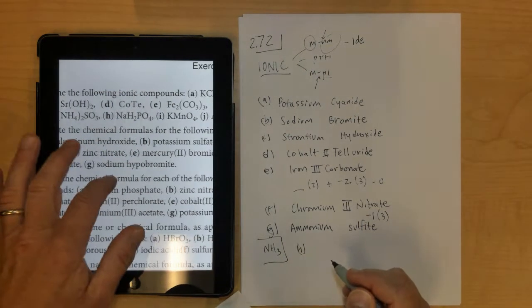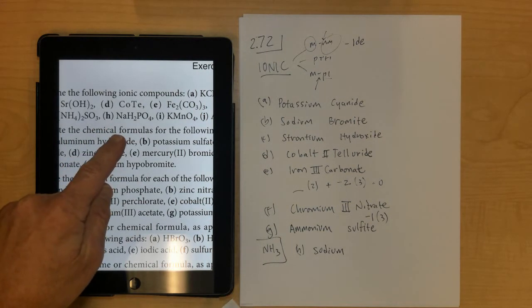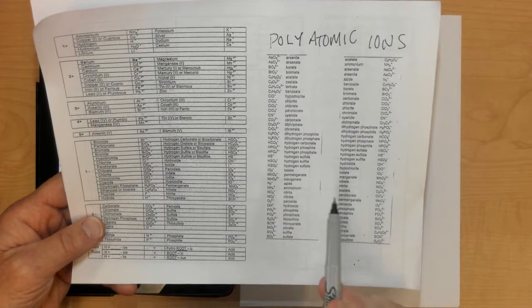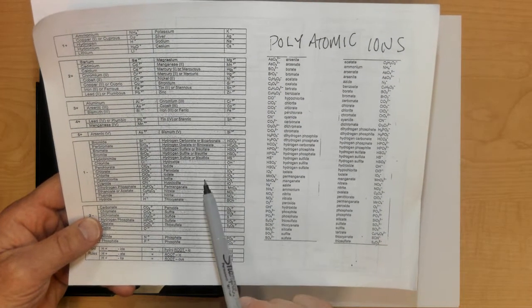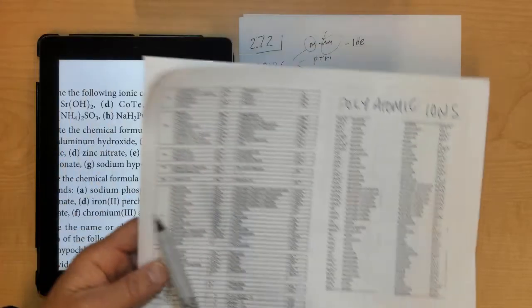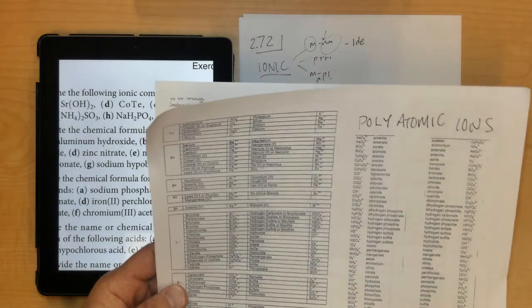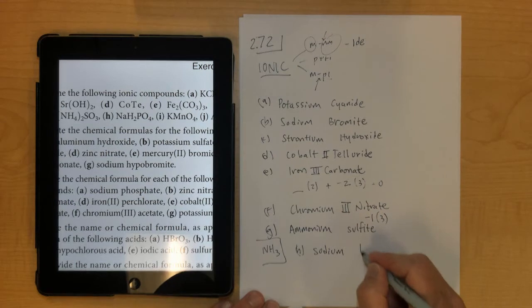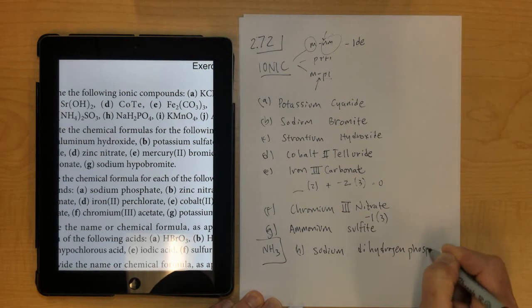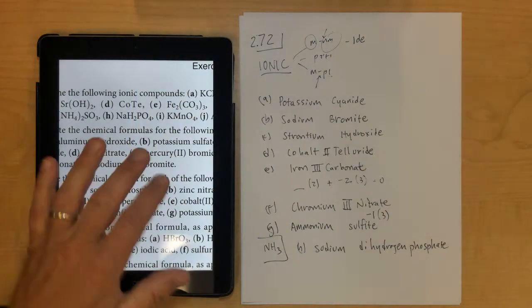Then letter H is sodium, and then H2PO4 is a polyatomic ion that you would have to look up back here, and it's got two H's to it, so this one would be called, it probably has a couple of names, but dihydrogen phosphate is one of them, because it's got two hydrogens and then a phosphate. Let's just stick with that. And it doesn't need a Roman numeral, because sodium is in group 1, and group 1 never needs Roman numerals.